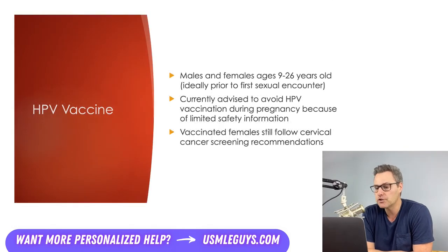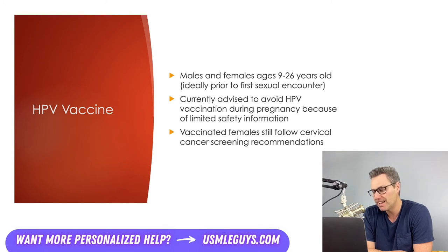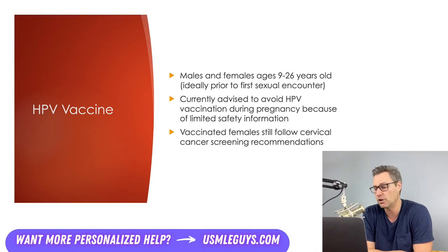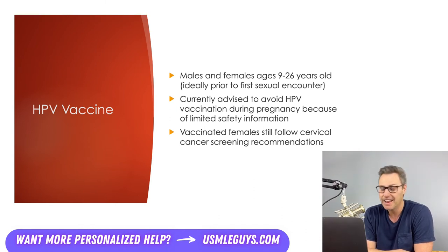There is an HPV vaccine covering several strains responsible for both genital warts and cancer-causing HPV. Both males and females are recommended to receive the vaccine starting around age 9 up to age 26, ideally prior to their first sexual encounter. Some studies have looked at patients given the vaccine while unknowingly pregnant, and so far there does not appear to be evidence of significant harm to the fetus, but administration while pregnant is still advised against. Females should still undergo cervical cancer screenings because not all HPV types are covered by vaccination and some could still cause malignancy.